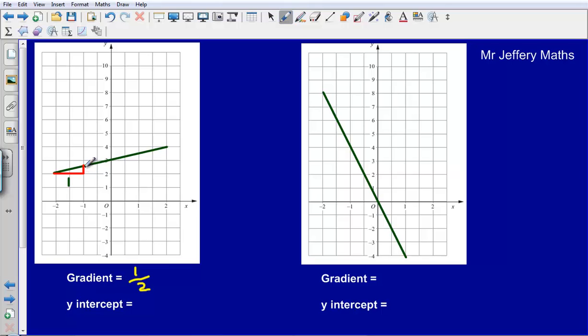Now the y-intercept, where is my y-intercept? Well that's simply the point at which the graph is cutting through the y-axis. And that means that the y-intercept is at plus three. So my equation for this graph would be y equals half x plus three.